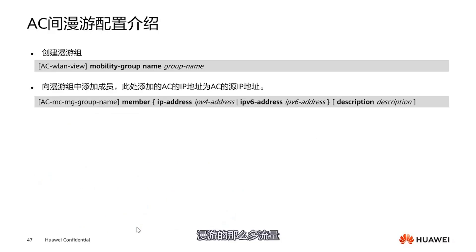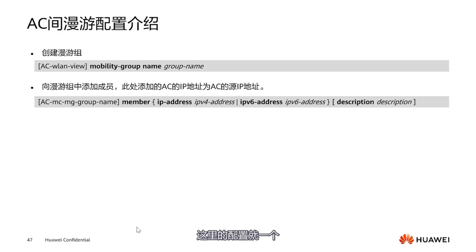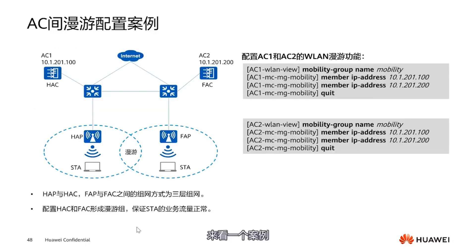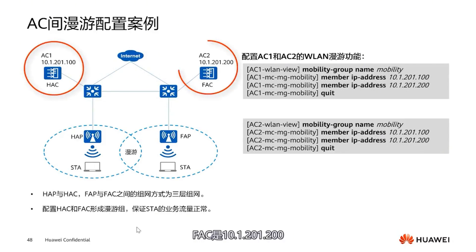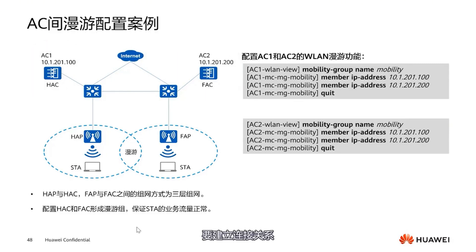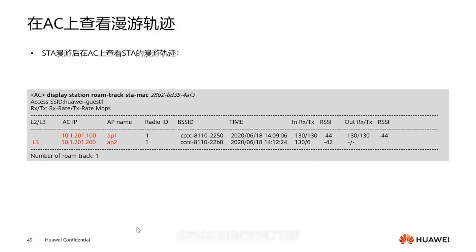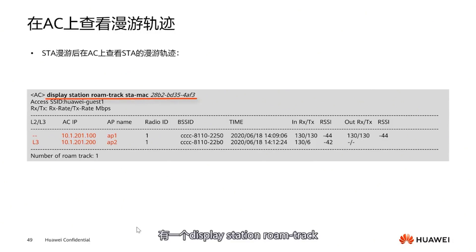With so many roaming traffic models, basically there is minimal configuration needed. Intra-AC roaming is supported by default. Inter-AC Layer 2 roaming needs configuration, and the configuration is just two steps: first, create a roaming group and write down the roaming group name; second, add two ACs to the roaming group. That's it — very simple configuration. For example, HAC is 10.1201.100 and FAC is 10.1201.200. A roaming group named 'mobility' is configured with member one and member two on both ACs under the same roaming group server. To verify roaming, use the display station roam-track command.